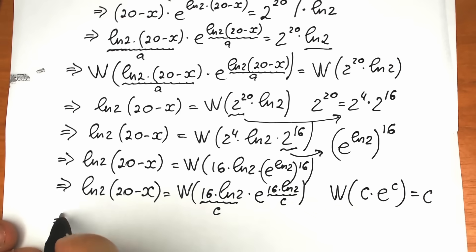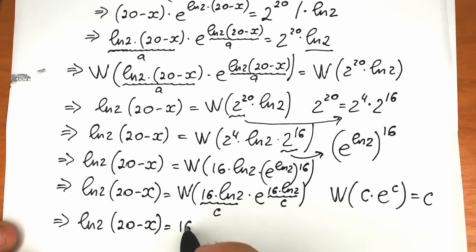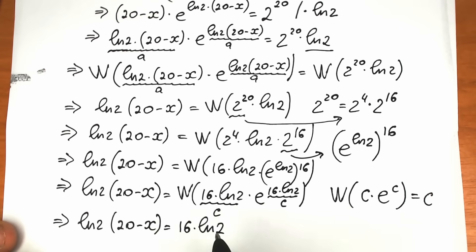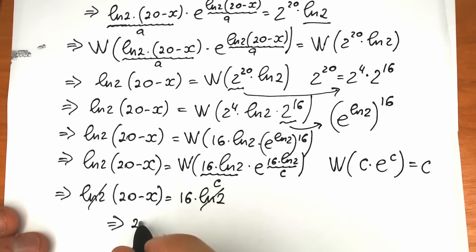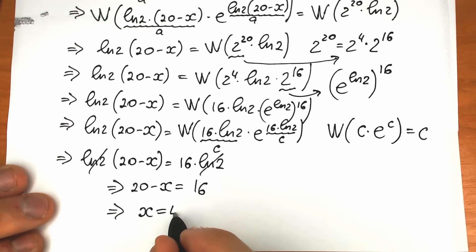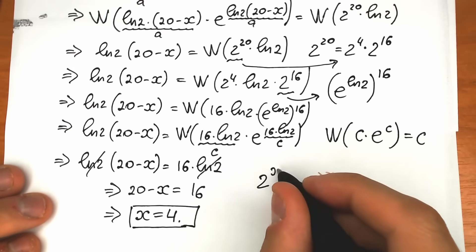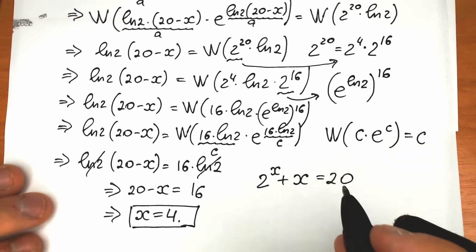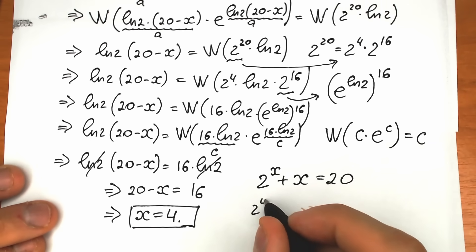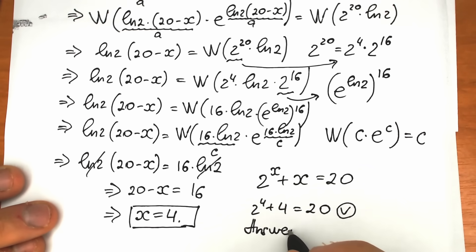So we have natural log 2 times 20 minus x equal to 16 times natural log 2. We can easily cancel natural log 2 from both sides, giving us the final equation: 20 minus x equal to 16. So x equal to 4. Many students solve this by inspection right away — 2 to the power 4 plus 4 equals 20 — so they say x equals 4, and that is absolutely correct.